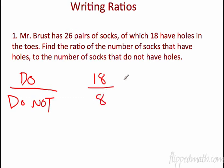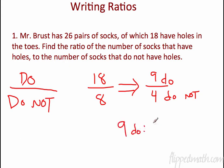So if I want to reduce this, I can. It's not required, but I'm going to because it's good habit. 18 to 8, a 2 can be taken out of both. So that's nine to four. So nine do for every four that do not. If you want to write it with a colon, you can do that as well. You just write it like this: nine to four. There you go. That's the first problem. How easy was that? That was easy.